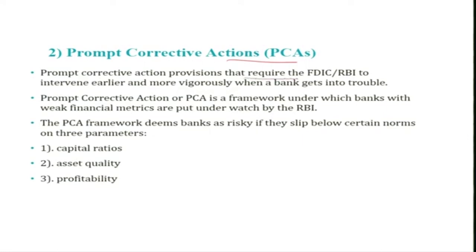Prompt corrective action provisions require the FDIC in the US and the RBI in India to intervene earlier and more vigorously when a bank gets into trouble. The PCA framework deems banks as risky if they slip below certain norms on three key parameters: one is capital ratios, which we already discussed; second is asset quality; and the third is profitability.